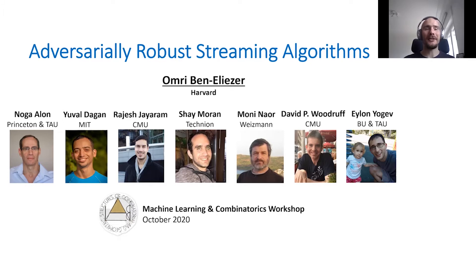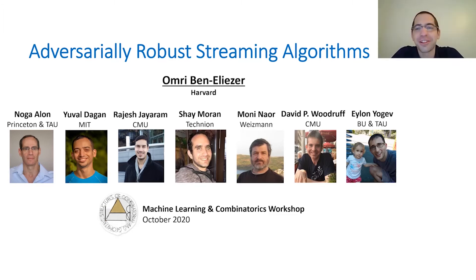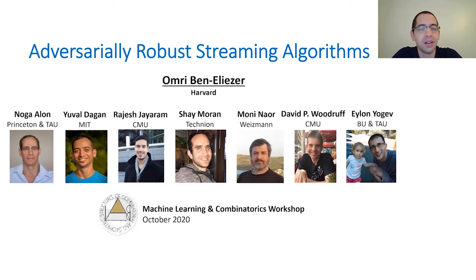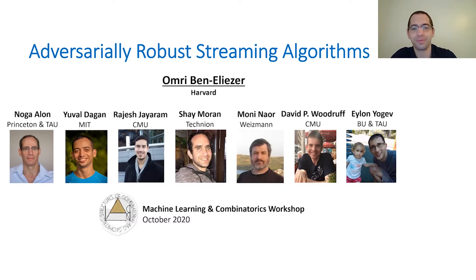He will talk about some of his recent work on adversarially robust streaming algorithms. This talk is based on several joint works with Noga Alon, Yuval Dagan, Rajesh Jairam, Shai Moran, Moni Naor, David Rudroff, and Elon Yogev.